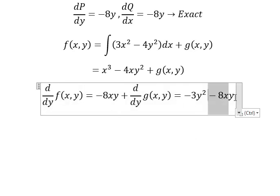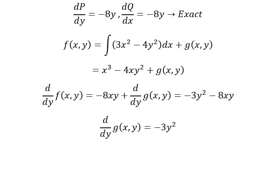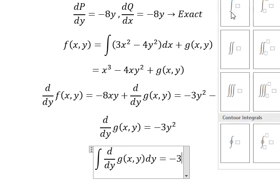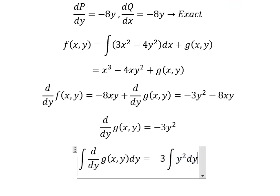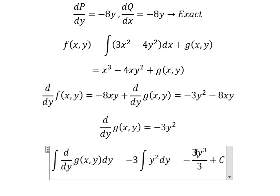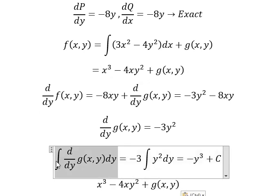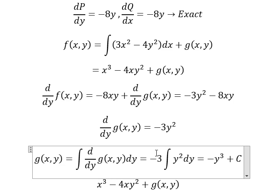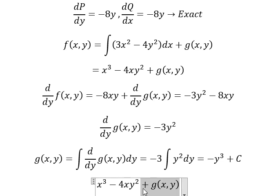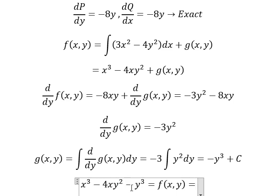Now we need to simplify both sides. We take the integration of both sides and we get this result. Simplifying, we have g(y) equals to this one. And we know that this equals to f(x,y). So f(x,y) equals to c, and we can simplify the final answer like this.